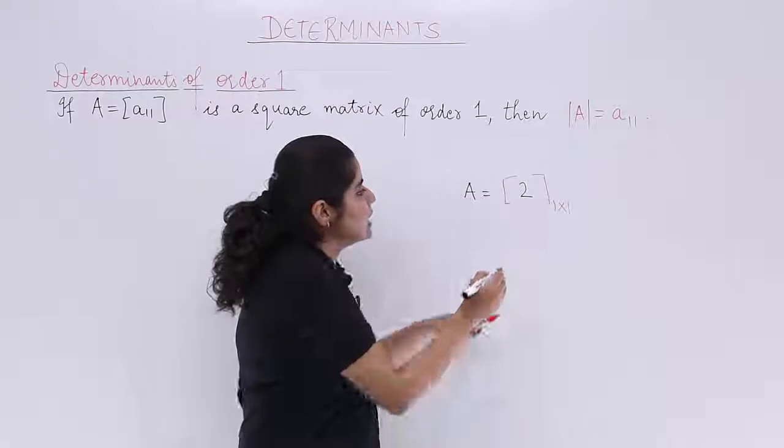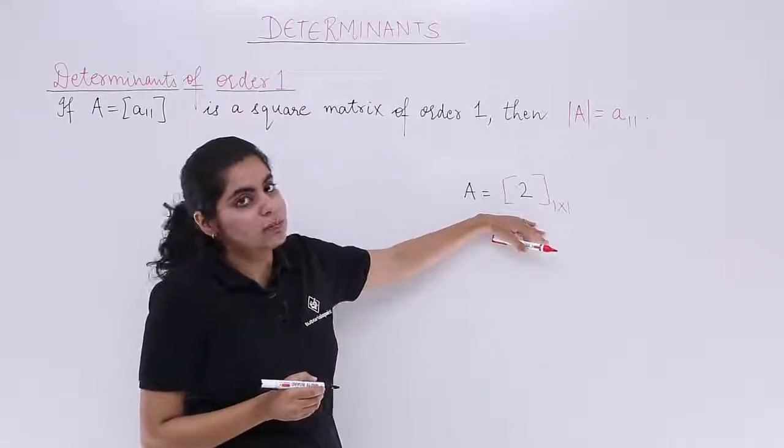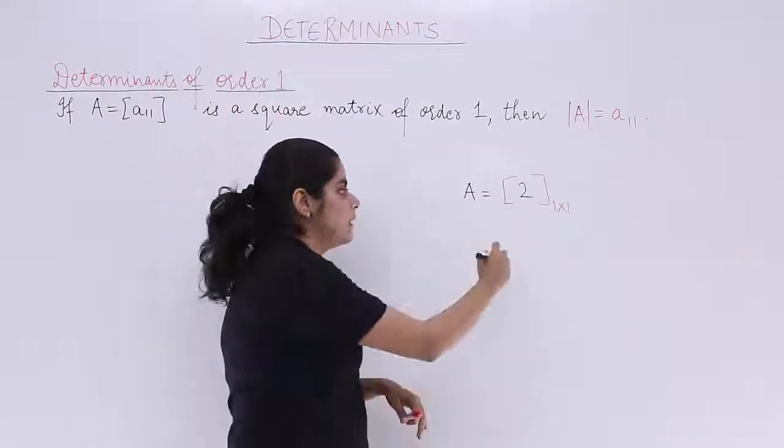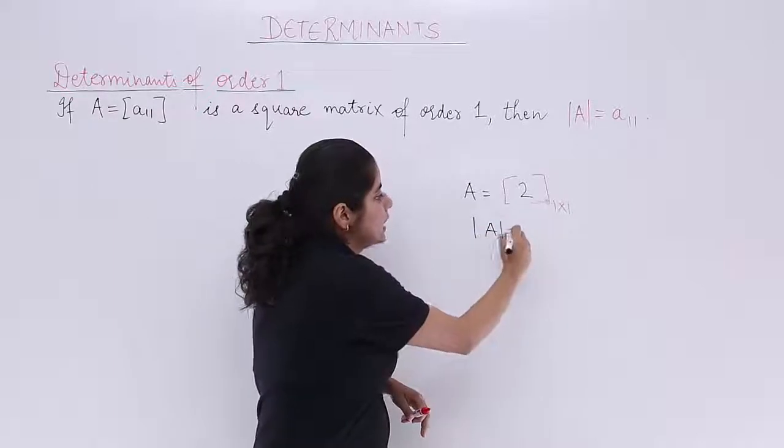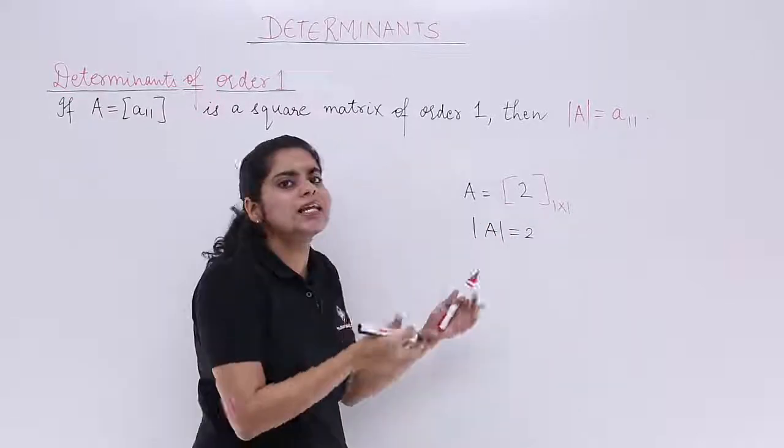So if I say that A is a given matrix of order 1 by 1 with the element 2, then |A| in this case will be 2 only. That is as simple as that.